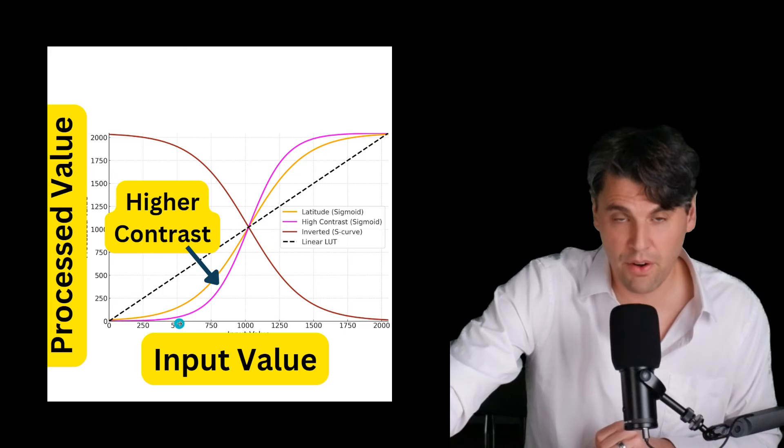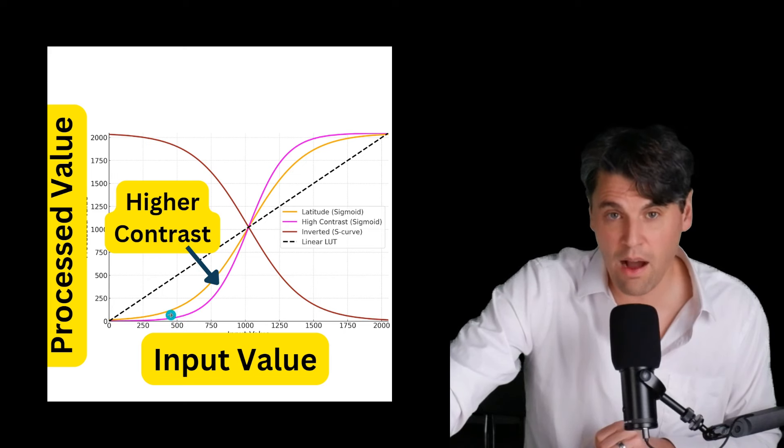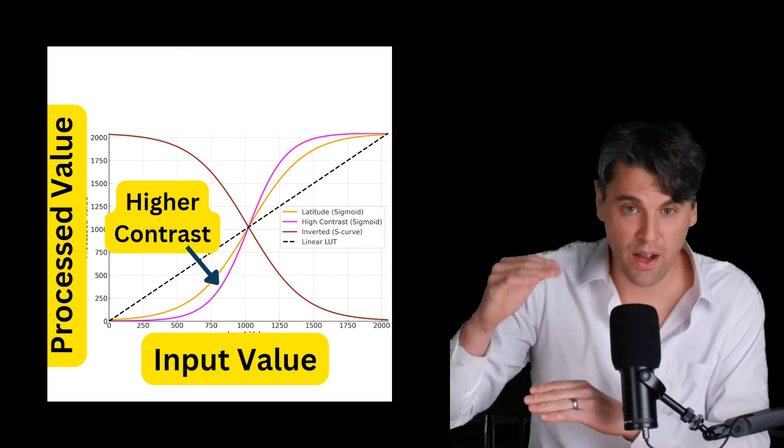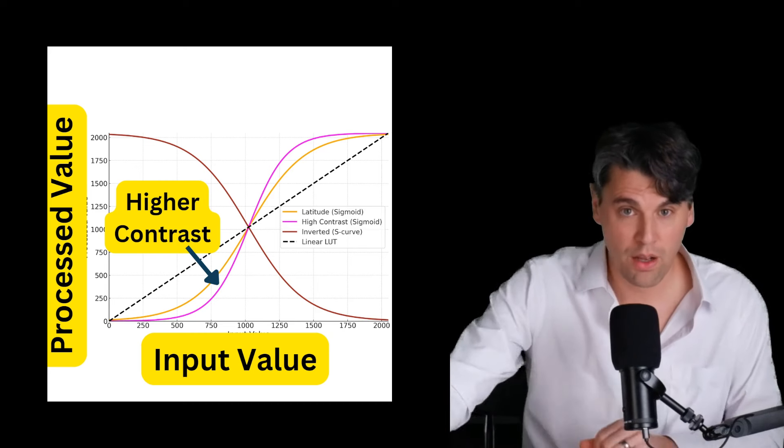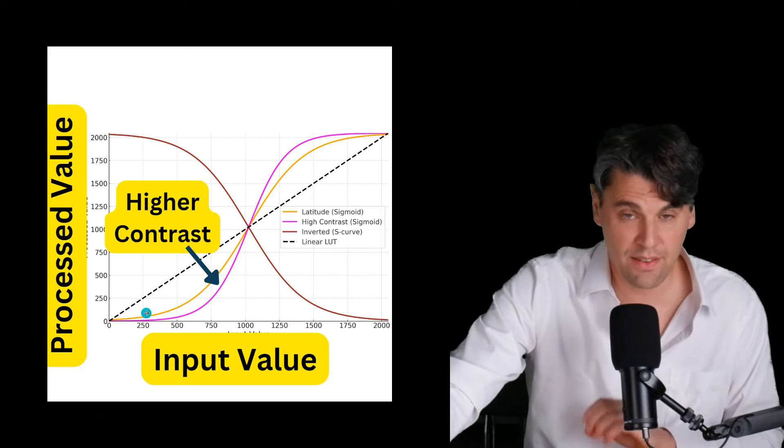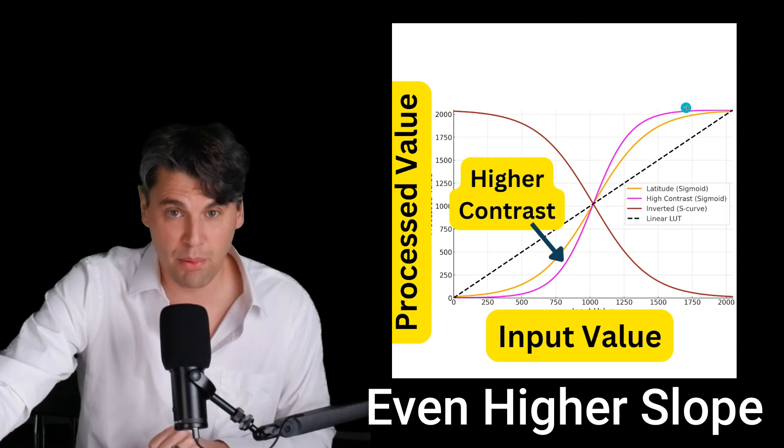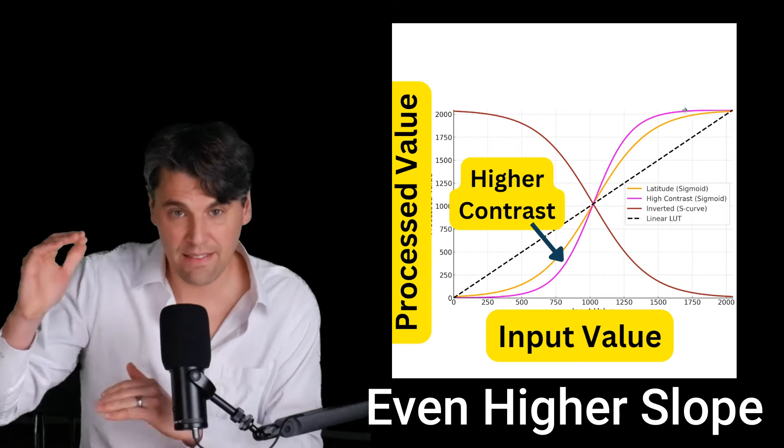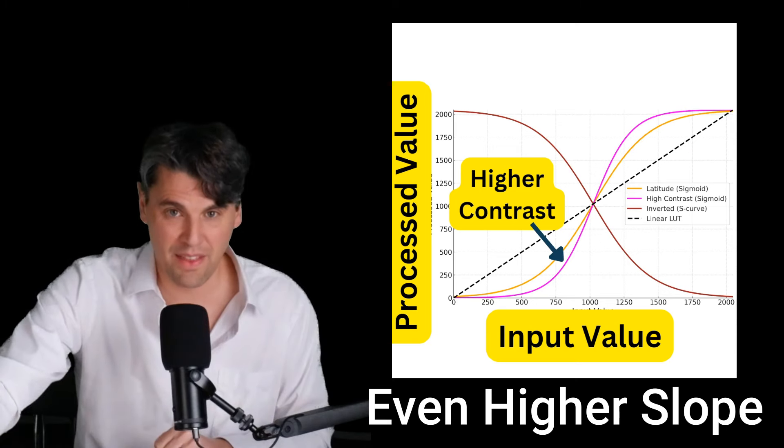Then if we want to go to this higher contrast image, we want to increase our contrast even further. Now, if we have a value of 500 and we put it in, the output is a value of 40 or so. It's even less. Those lower input values, we're actually pushing those down more with this higher contrast setting. For higher values, we'd be pushing them up more, enhancing the contrast within the image.